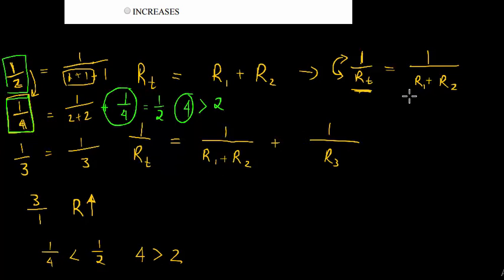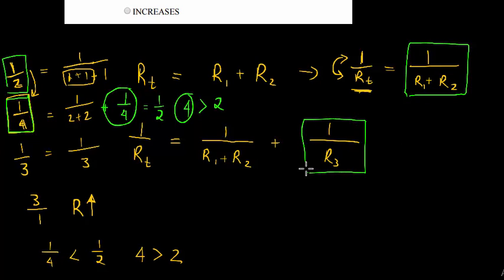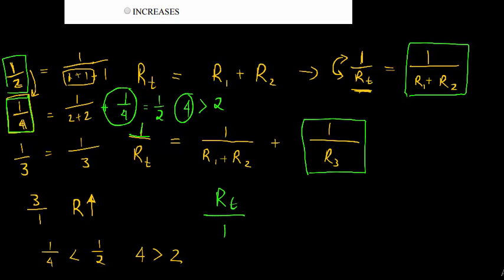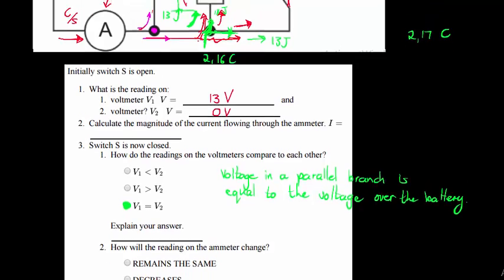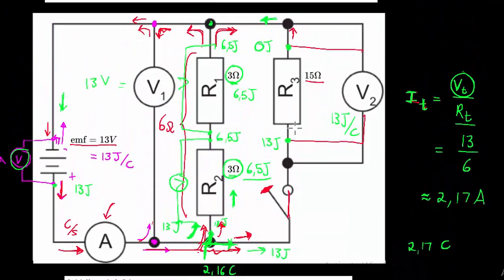So what I'm showing is that initially I only had one path, but now I'm adding another resistor in parallel — adding a fraction to 1/Rt — which makes 1/Rt larger. When you take the reciprocal of a larger fraction, the total resistance Rt becomes smaller.